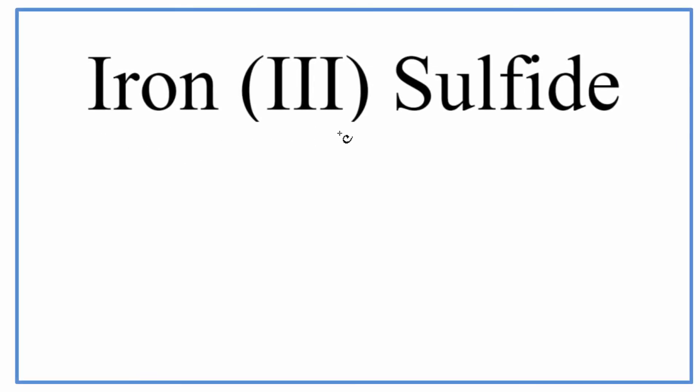To write the formula for iron three sulfide, we'll first write Fe for iron, and then sulfide, that's just sulfur, we'll write S.